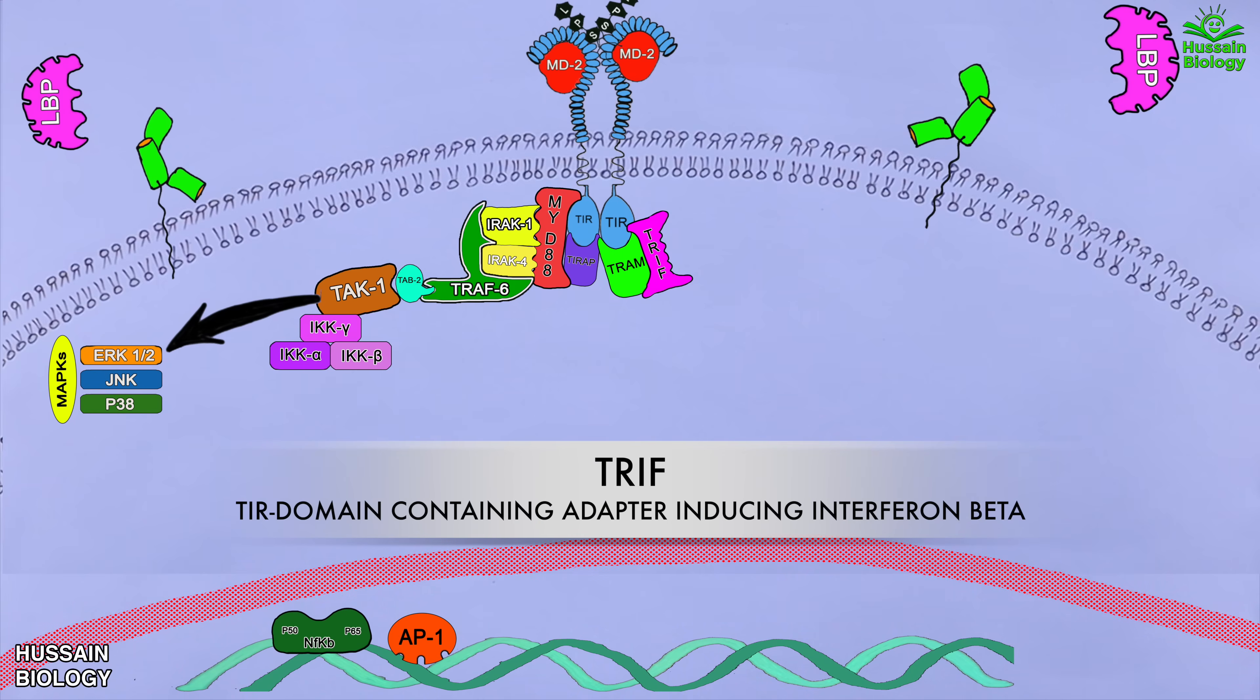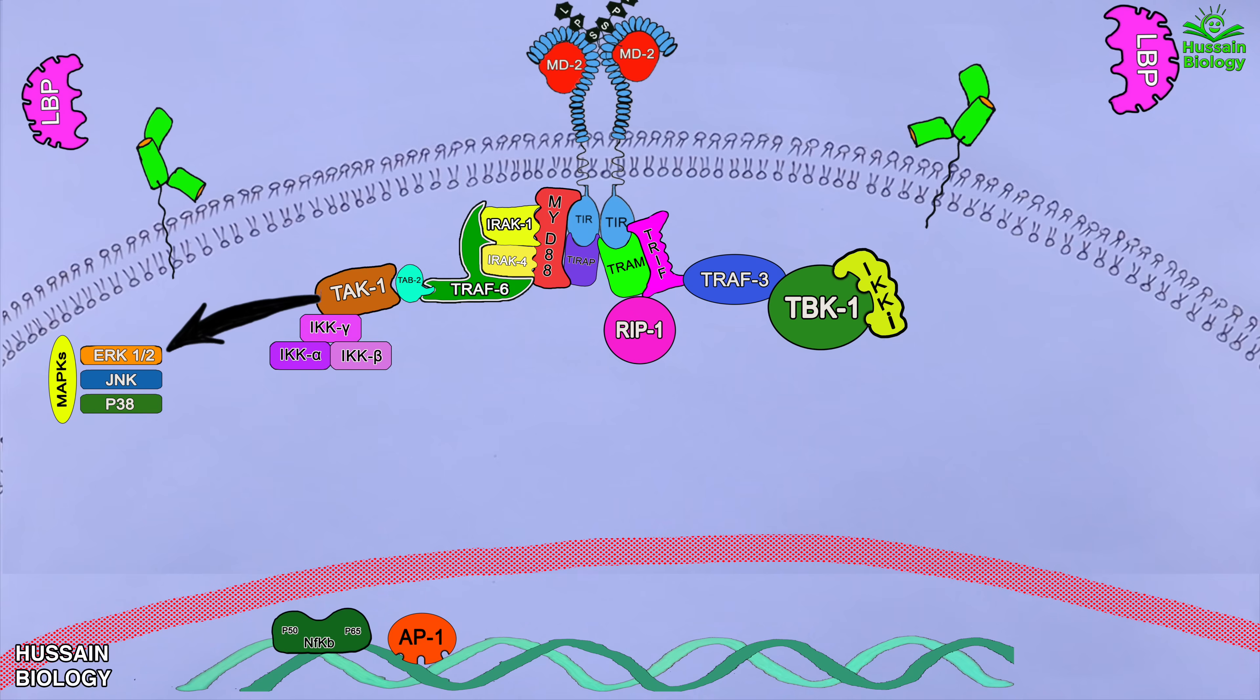From here TRIP can activate two different proteins. It activates RIP1 protein and TRAF3 protein. Let's first proceed with the TRAF3 protein. The activated TRAF3 protein further activates the TBK1 protein which is associated with IKKI complex.